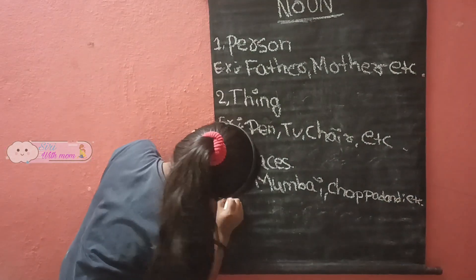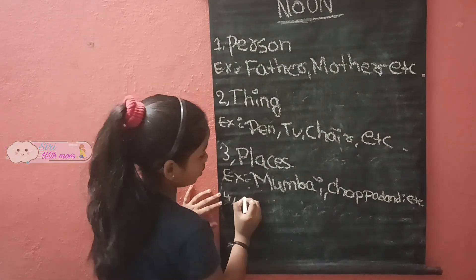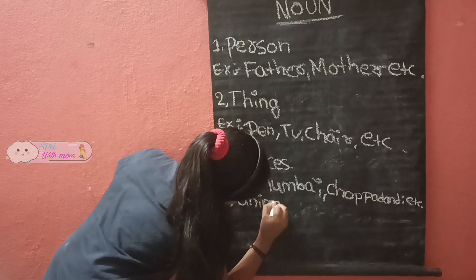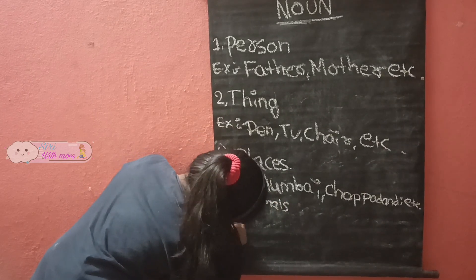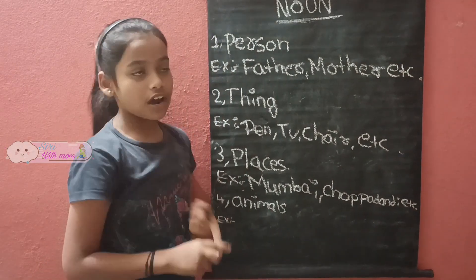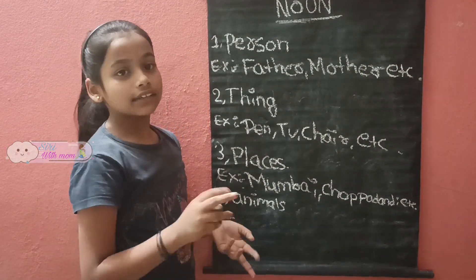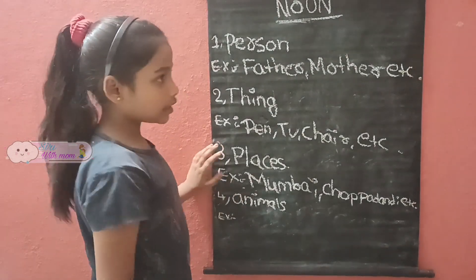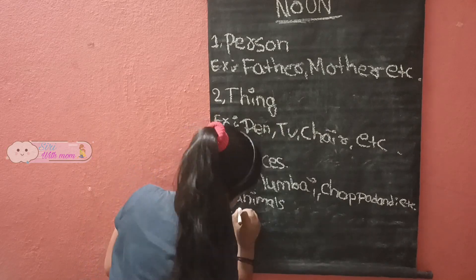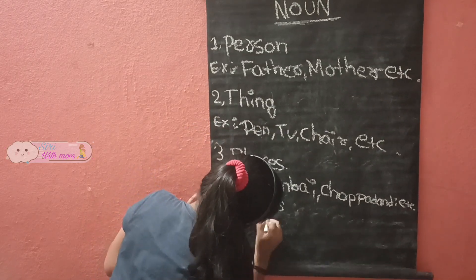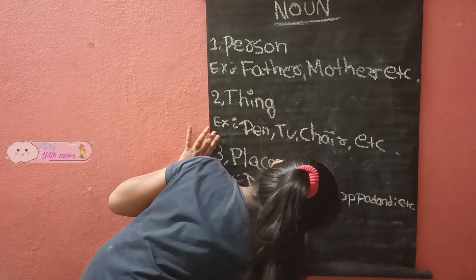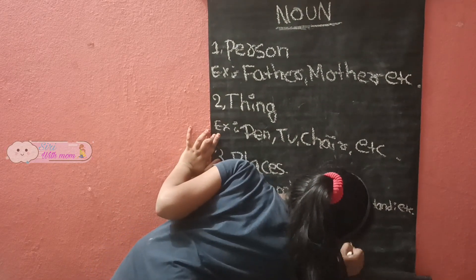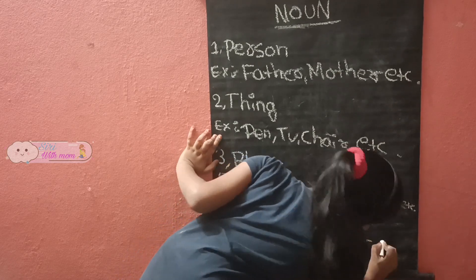Now fourth one: animals. Animal means dog, lion, tiger, leopard, cheetah — that's called animals. Examples: lion, deer, tiger, etc.